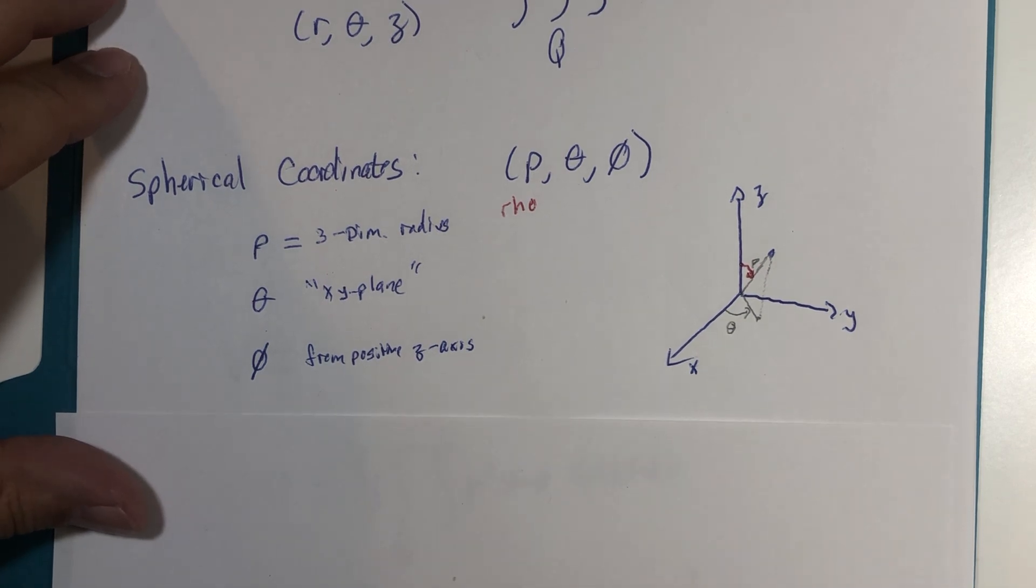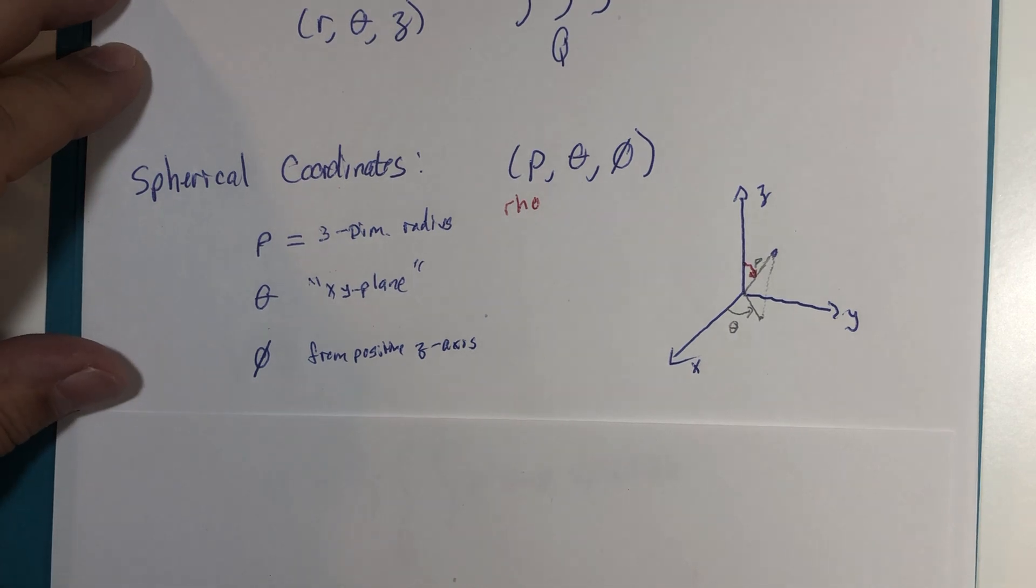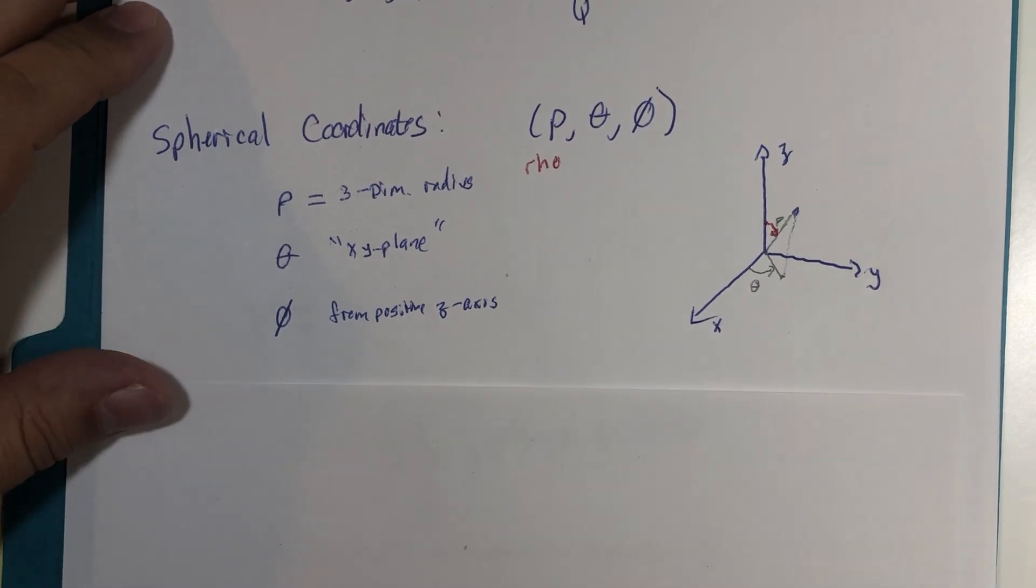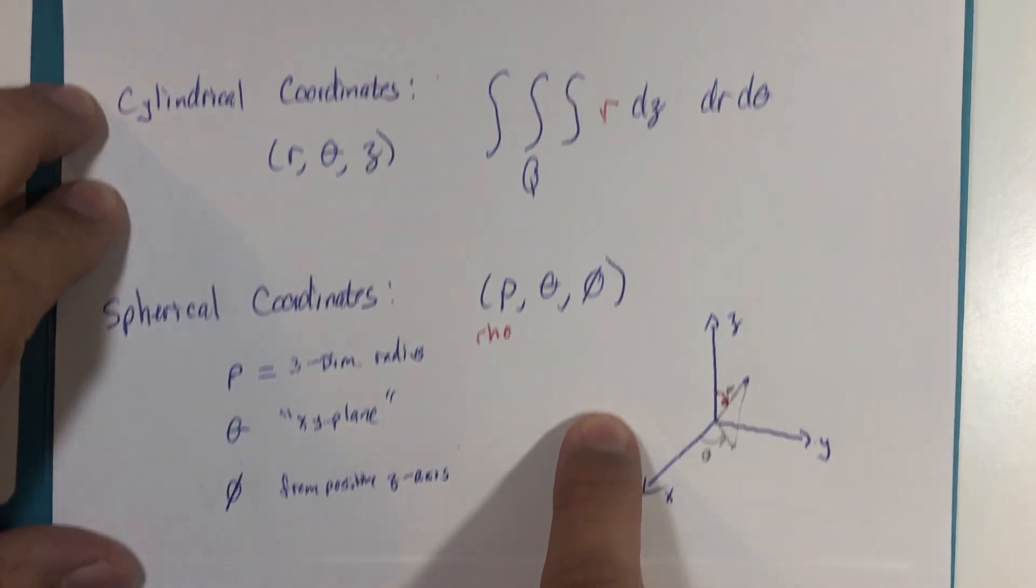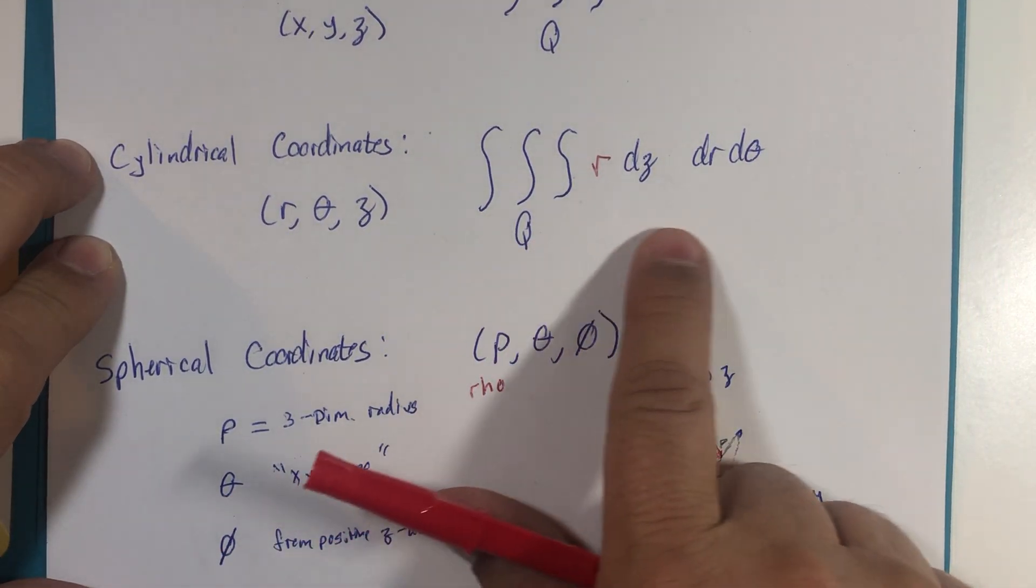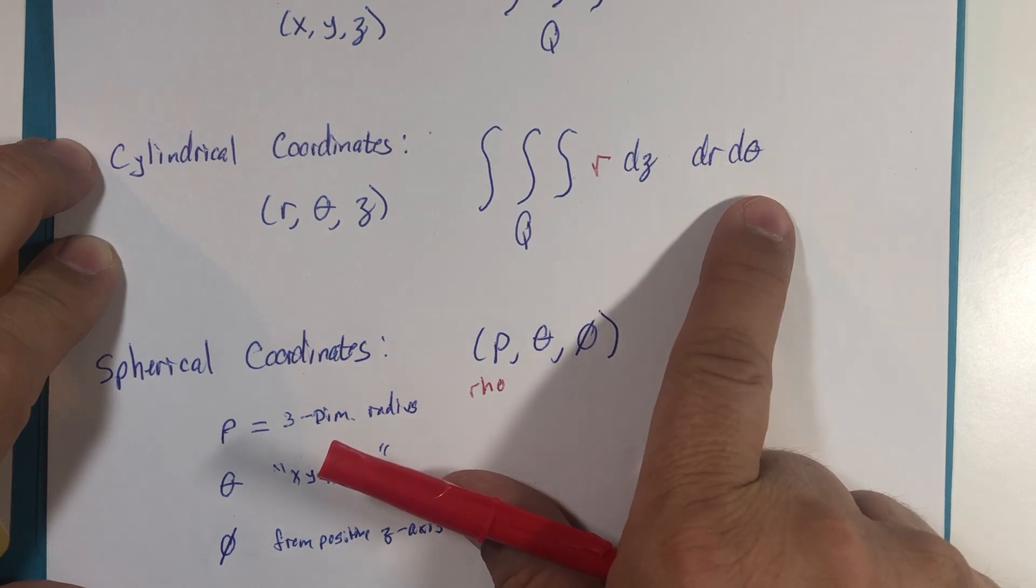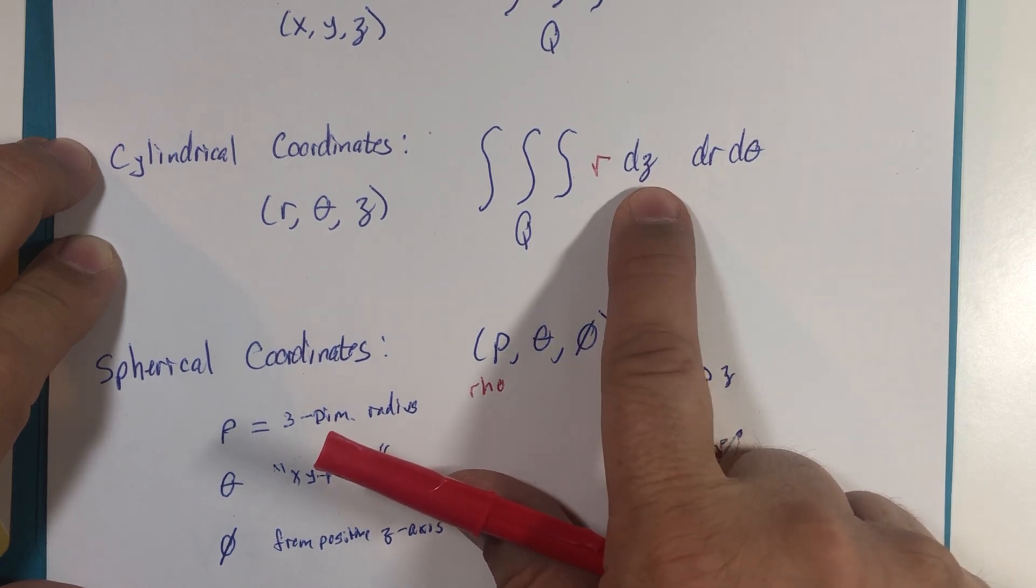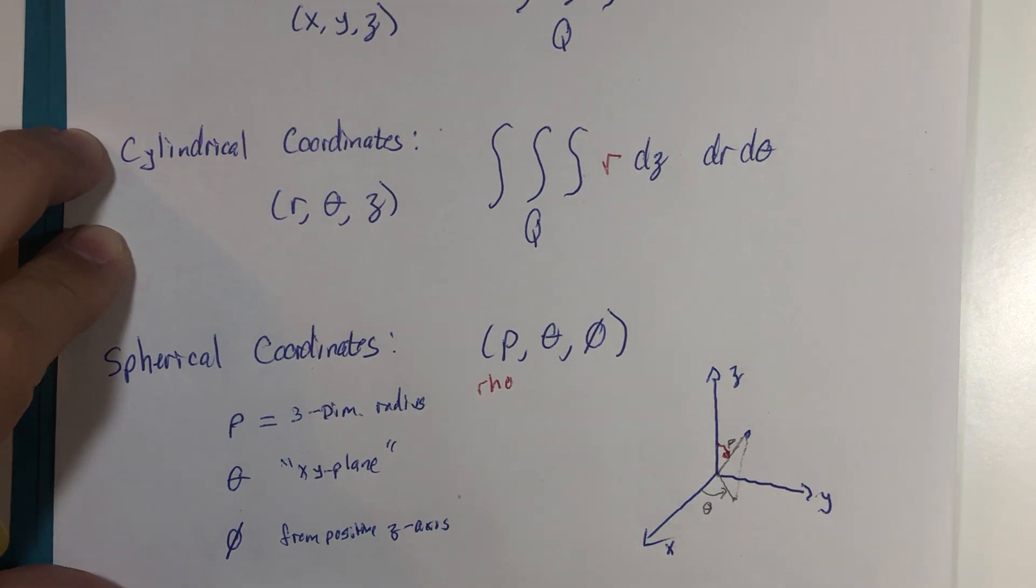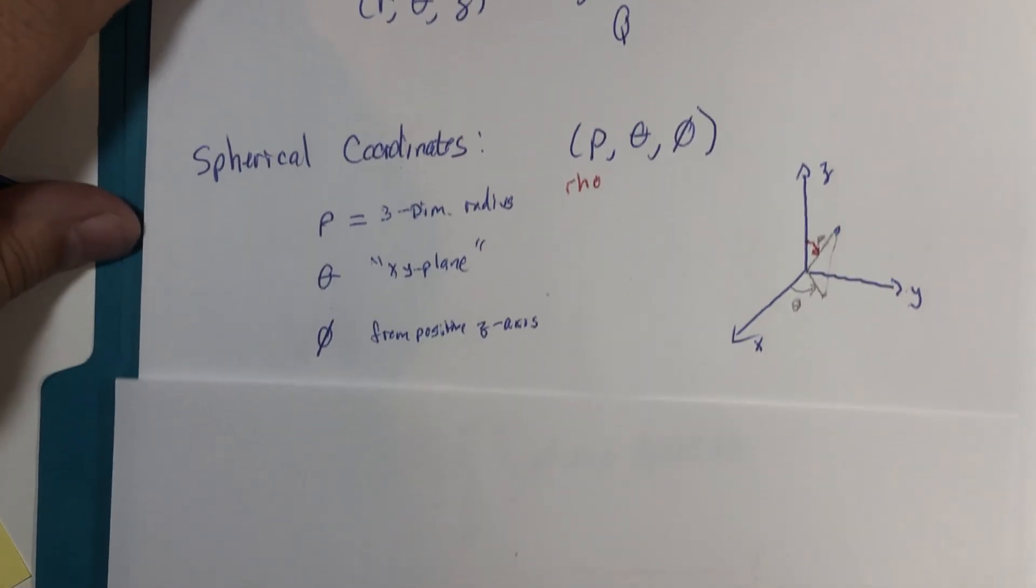If you recall, we had some conversion formulas that we used to expedite the process of just converting between coordinate systems. But before I put that up on the screen here, let me just show you when we have the triple integral. Remember, the r dr d theta was an area component in the xy plane, and then there's the third dimension. Well, it's much stranger in spherical coordinates.